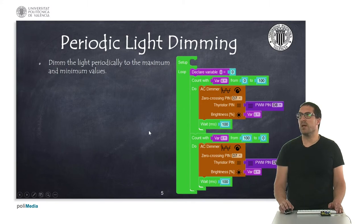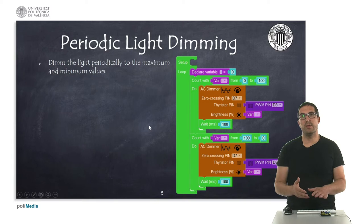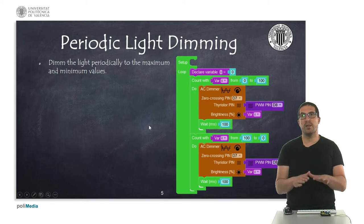In this first example what we're doing is basically we are controlling the brightness of the light, but we are doing this periodically, so means that it goes to the maximum brightness value and then goes to the minimum brightness value.